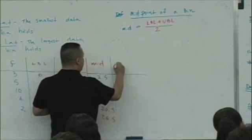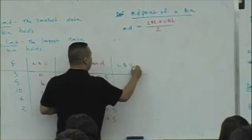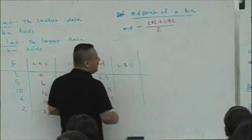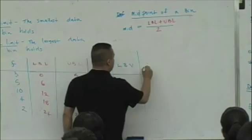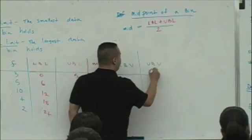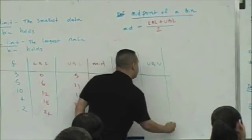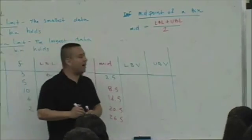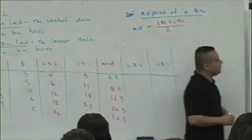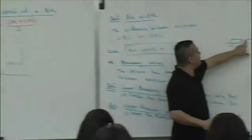I'm going to abbreviate this LBV for lower boundary value, and what's the other one going to be abbreviated as? UBV, upper boundary value. All right, you guys okay with that?